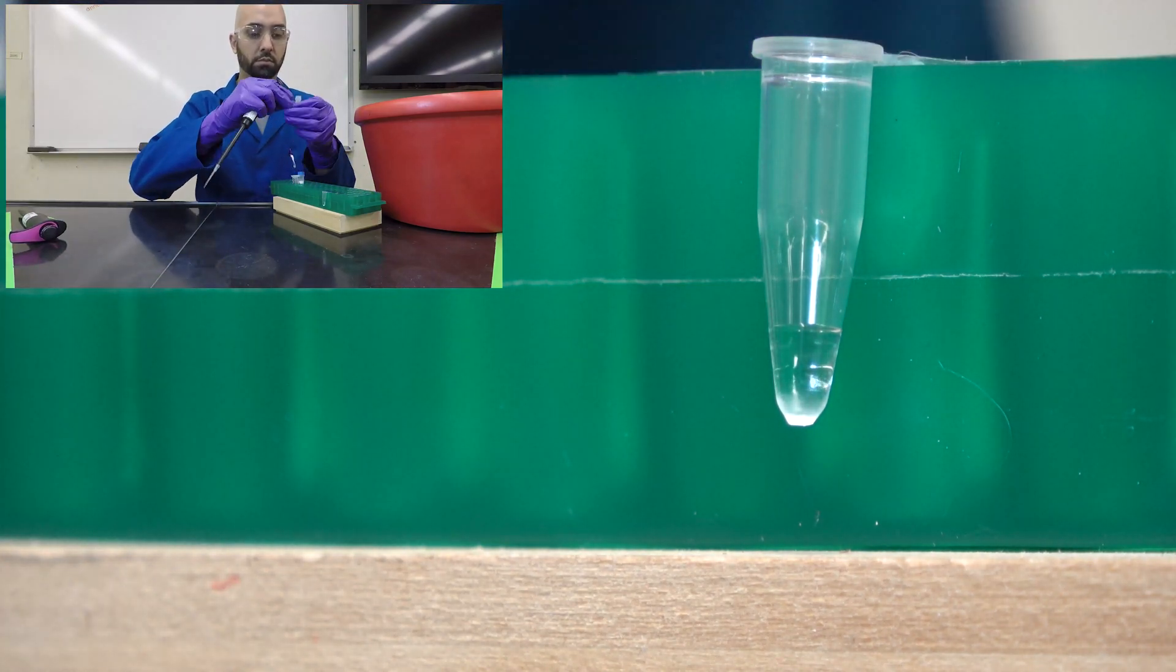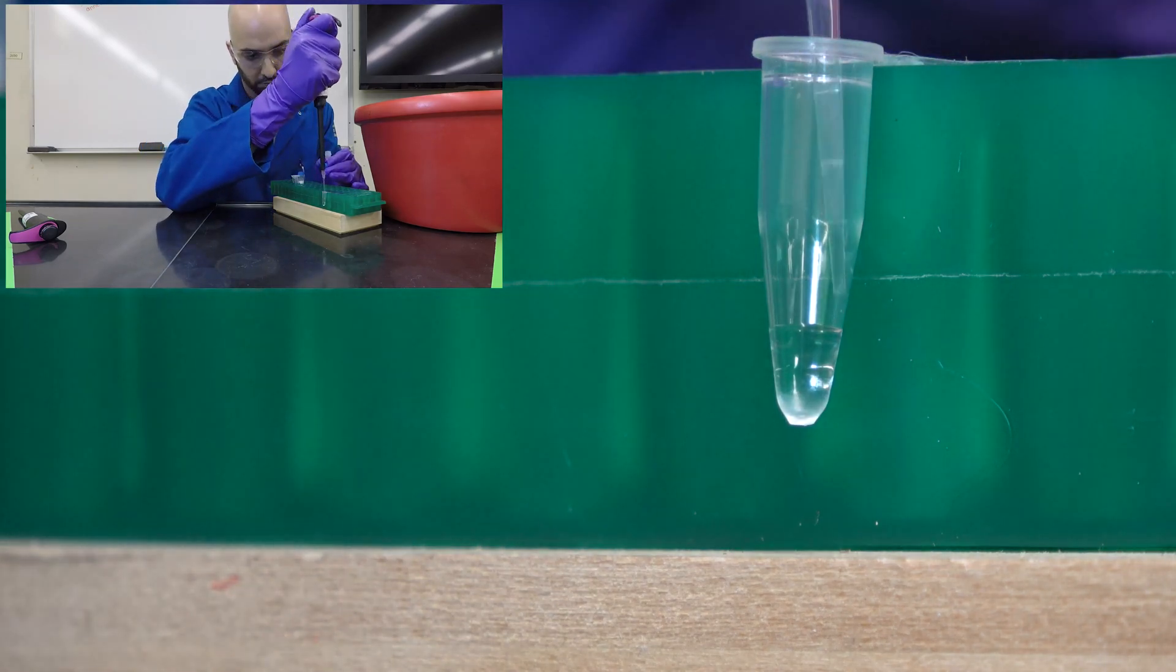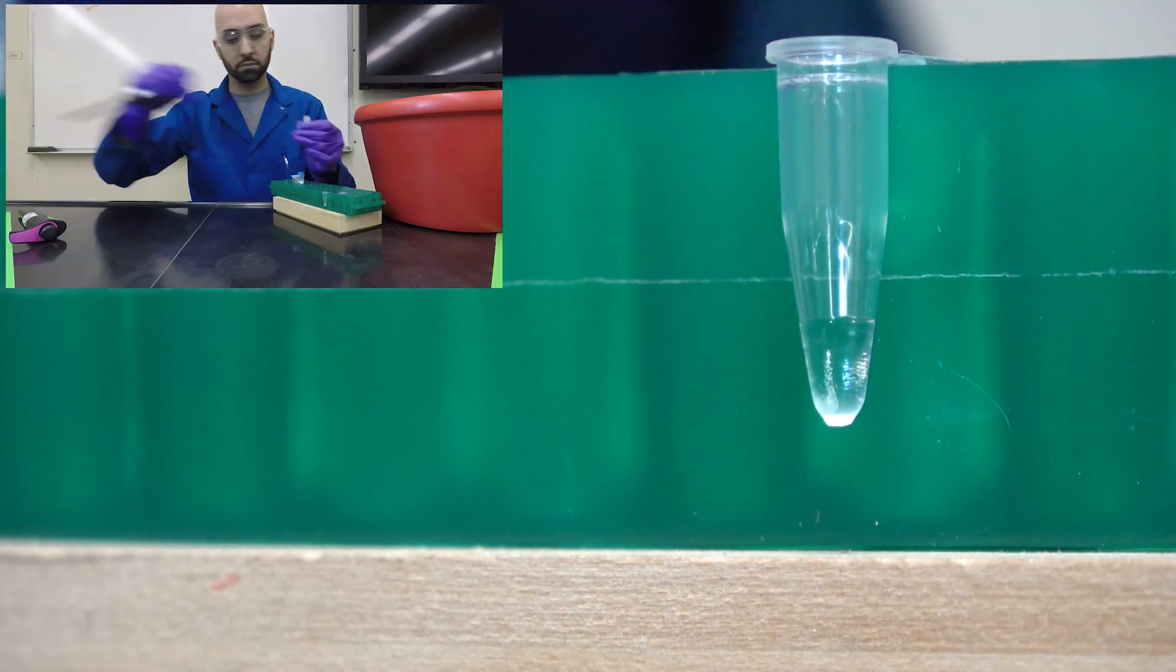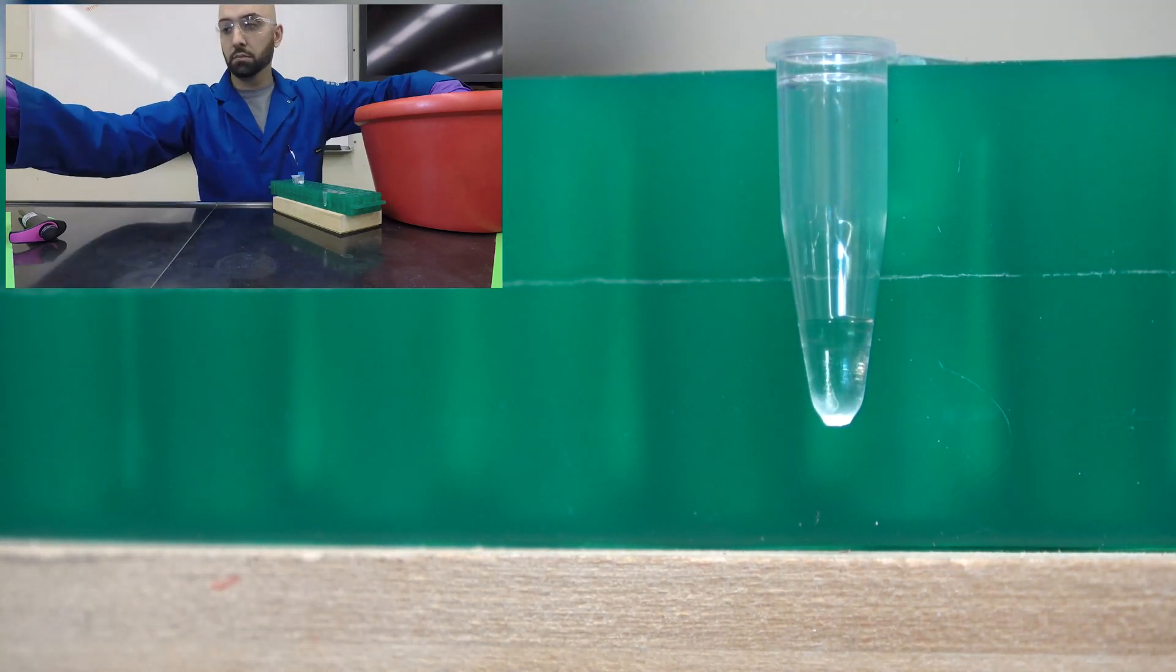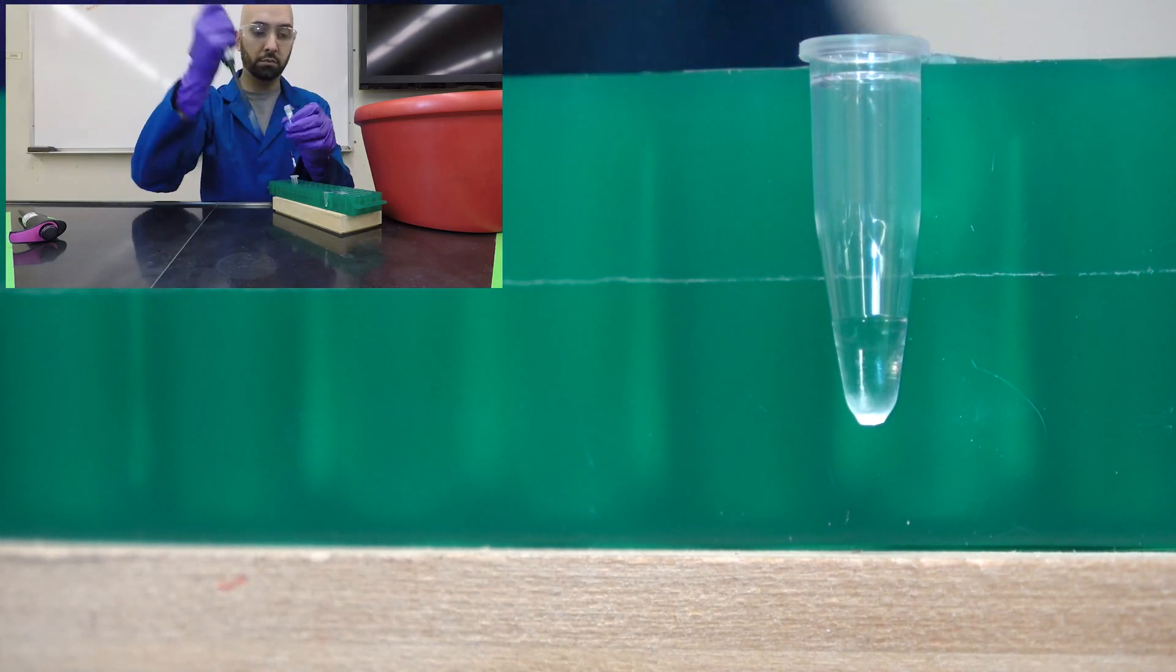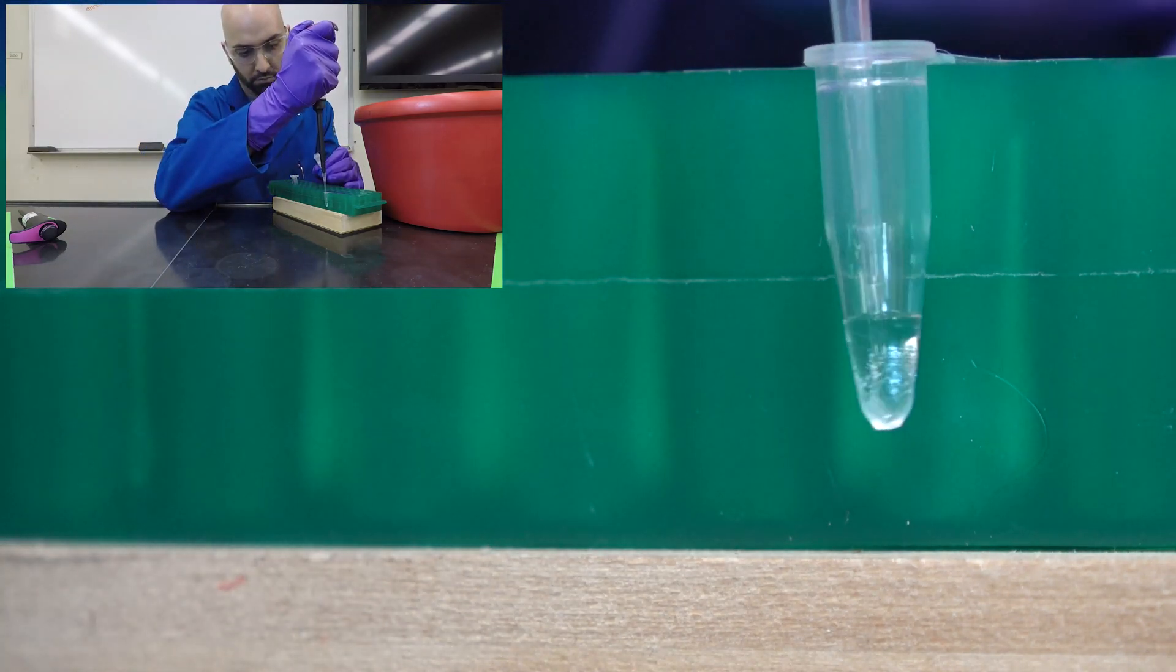We're setting it up in a special PCR tube. These have thin walls to allow quick temperature fluctuations when inside the thermocycler. You always want to add water and buffer first and the polymerase last when working with separate components.